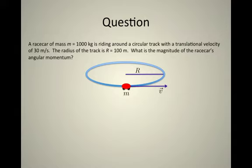Let's get some practice calculating angular momentum. Let's imagine a race car with a mass of 1000 kilograms traveling around a racetrack which has a radius of curvature of 100 meters at a constant velocity of 30 meters per second. Let's suppose we want to calculate the magnitude of the race car's angular momentum.